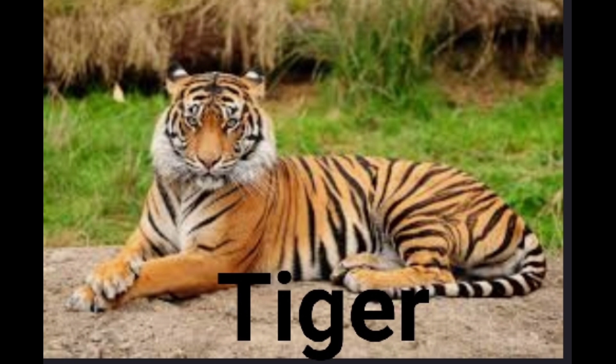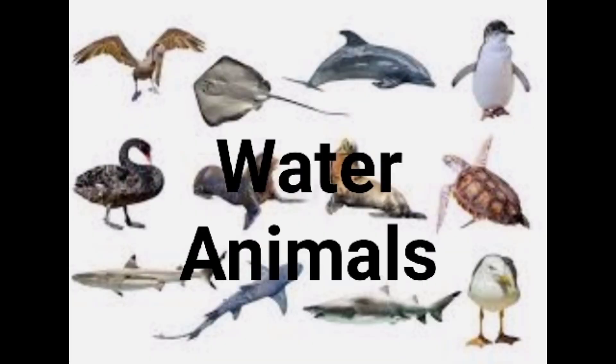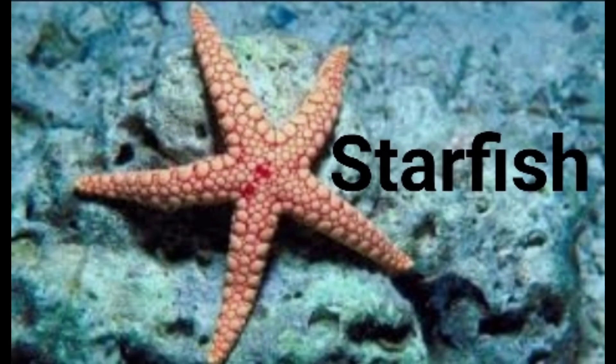After wild animals come water animals. Which animals? Water animals — the ones that live in water. The first water animal is starfish. See, it is a fish, but its shape looks just like a star, so its name is starfish.